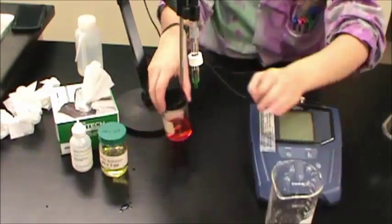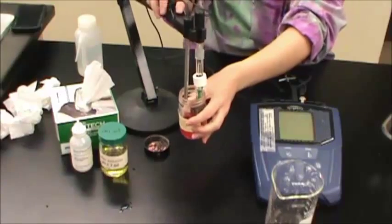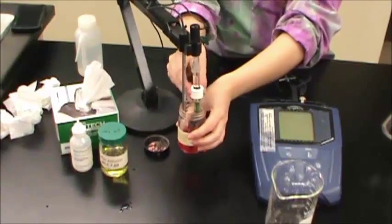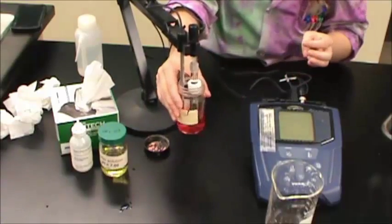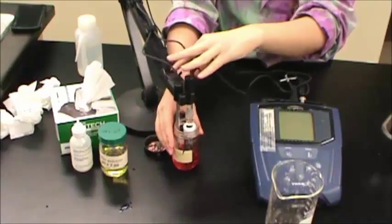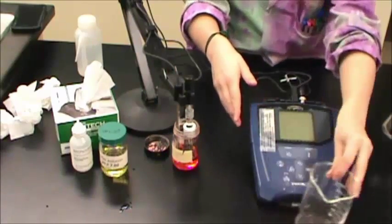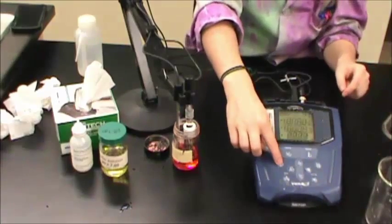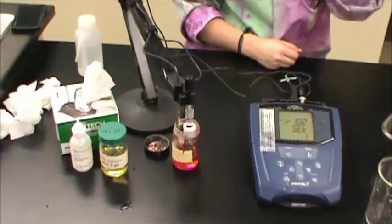Place both probes into either of the buffer solutions and swirl the container gently to remove any bubbles from around the ends of the electrodes. Turn the instrument on and leave the probes in the solution for approximately a minute before entering calibration mode.